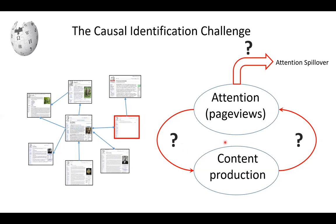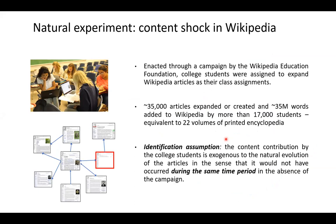Causal inference in a natural setting is challenging because different forces come into play simultaneously. To overcome this, we leverage a natural experiment: the Wiki Education Foundation has conducted for several years a program where they work with college instructors to create assignments for students to create or expand a Wikipedia article as part of their class. Many articles have been expanded or created this way, and the scale of the campaign is very large. This gives us a chance to study the impact of exogenous content contribution, particularly on underdeveloped articles.